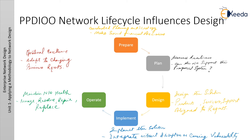The next phase is the Operate phase. Operation is the final test of the design's appropriateness. The Operate phase involves maintaining network health through day-to-day operations, which might include maintaining high availability and reducing expenses. The fault detection, correction, and performance monitoring that occurs in daily operation provides initial data for the network life cycle's Optimize phase. The Optimize phase is based on proactive network management, the goal of which is to identify and resolve issues before real problems arise and the organization is affected. Reactive fault detection, corrective action, and troubleshooting are necessary when proactive management cannot predict and mitigate failures in the PPDIOO process.